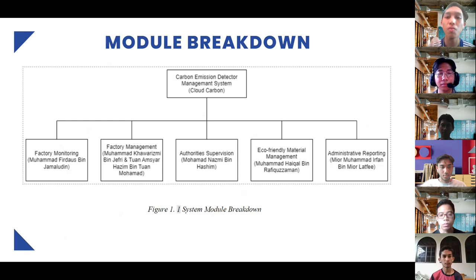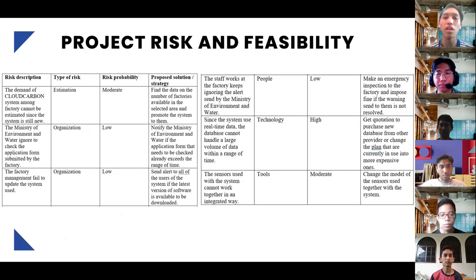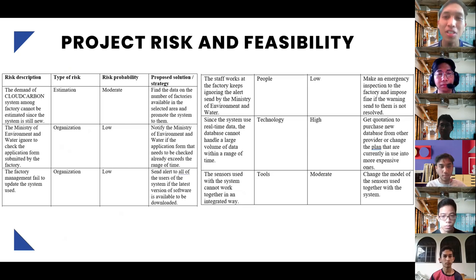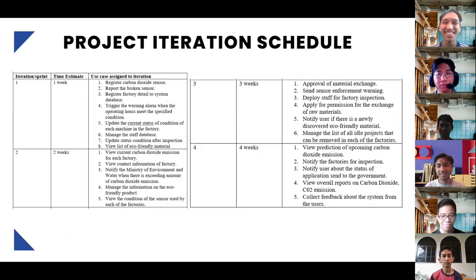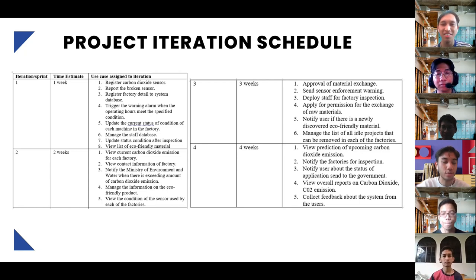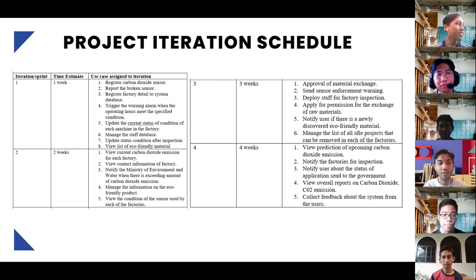We break down our system into five modules: factory monitoring, factory management, authorities supervision, eco-friendly material management, and administrative reporting. For the project iteration schedule, in the first week we have eight use cases, the second week five use cases, the third week six use cases, and the fourth week five use cases.